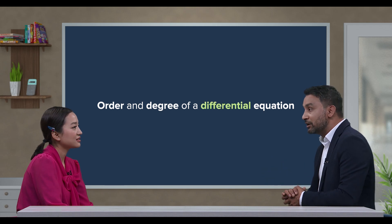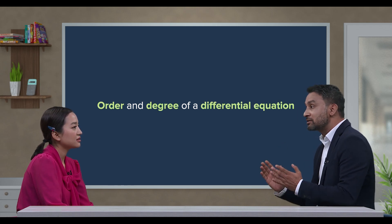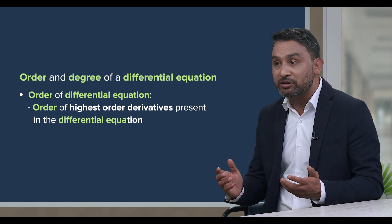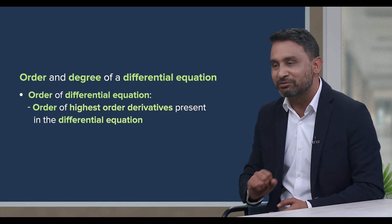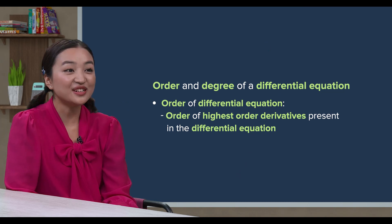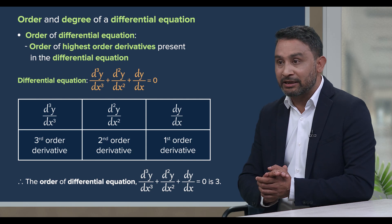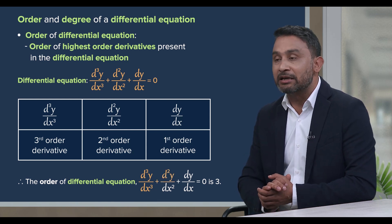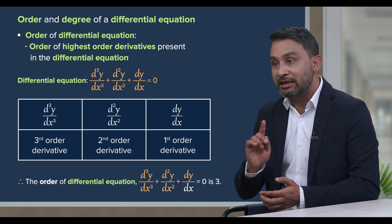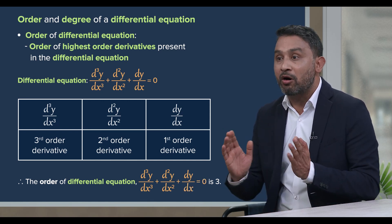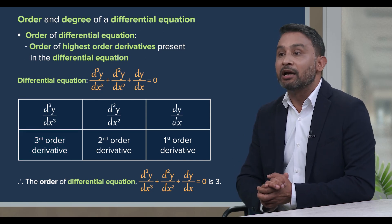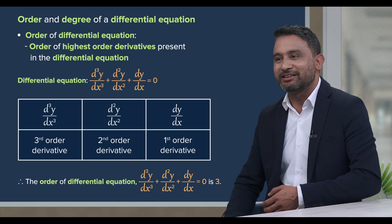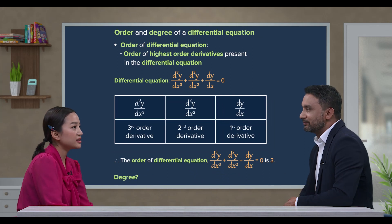So, let's discuss the order and degree of differential equations and move forward. First of all, the order of a differential equation is the highest derivative present in the equation. Let's clarify with a definition and example. For example, in the differential equation d³y/dx³ + d²y/dx² + dy/dx = 0, the highest order of derivative is the third derivative d³y/dx³, so the order is 3.